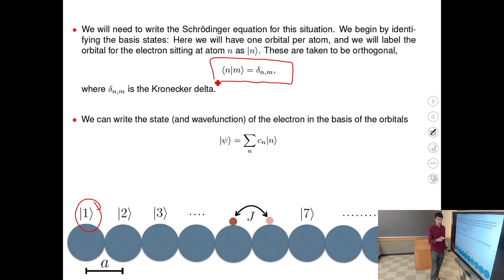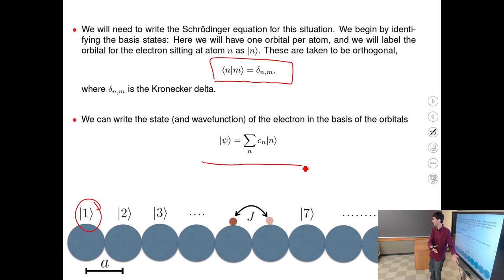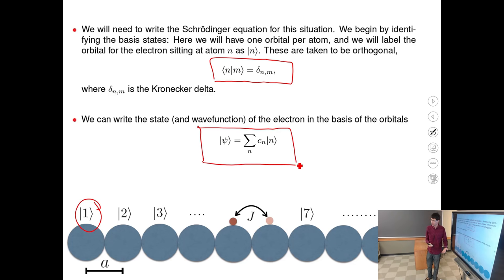The general form of the wave function that can be a solution of our Hamiltonian is a superposition of these orbital states. The electron can be split between orbital states — partially on the first atom, partially on the seventh, partially on the n-minus-first atom. We look for solutions to our model in the basis of atomic orbitals.